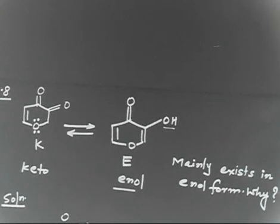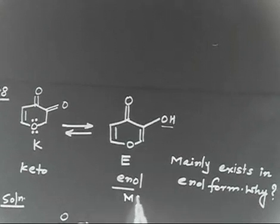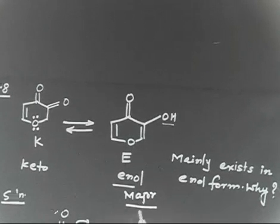Problem says this compound mainly exists in enol form. So the enol form is the major product, or you can say at equilibrium, it will mainly exist in enol form. You have to give me the reason why this mainly exists in enol form.